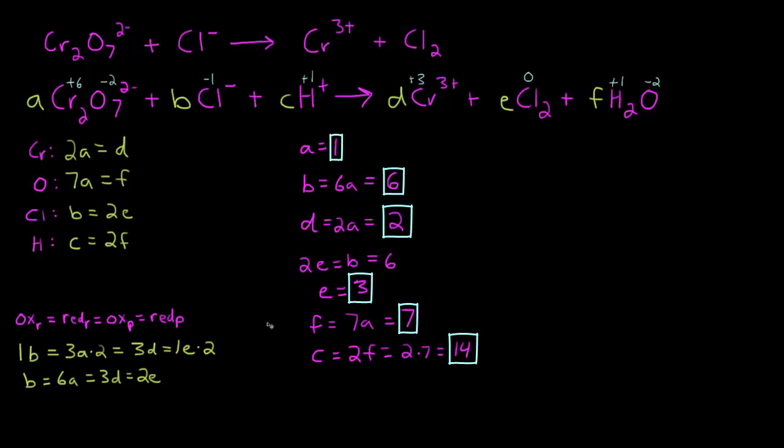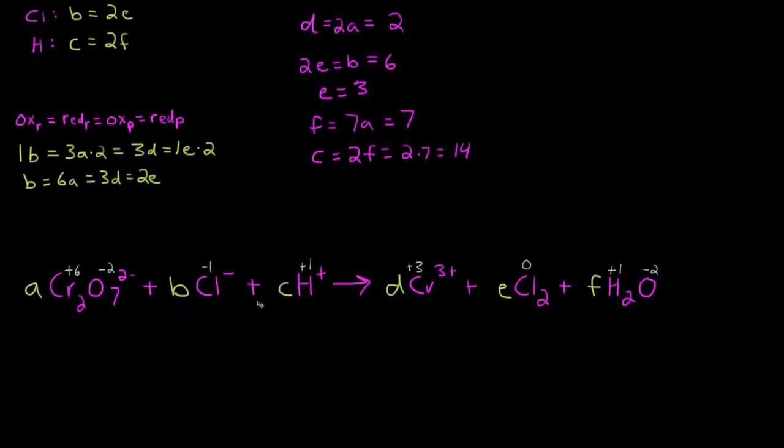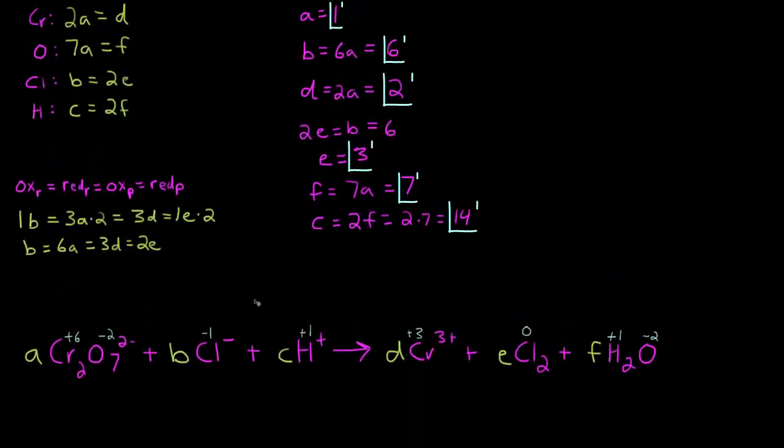Okay, so this works out pretty well, we don't have any fractions, so we can go ahead and scroll down and plug everything in and see if it makes sense. So let's see, we've got A is 1, so we just have Cr2O7 2- plus B is 6, so 6 Cl- plus C is 14 H+.